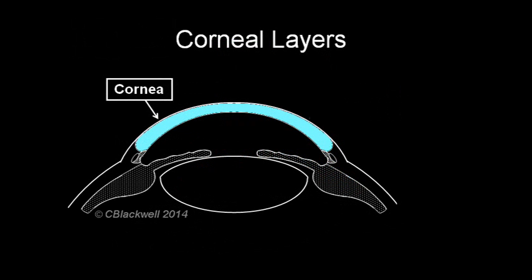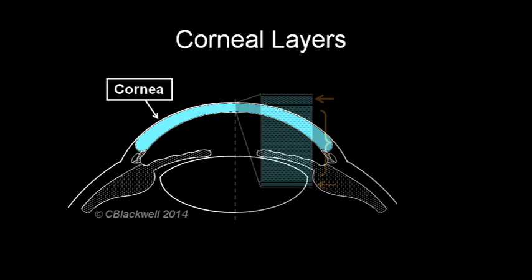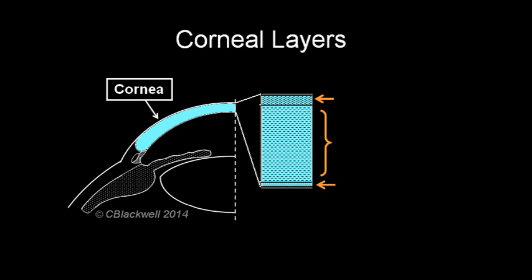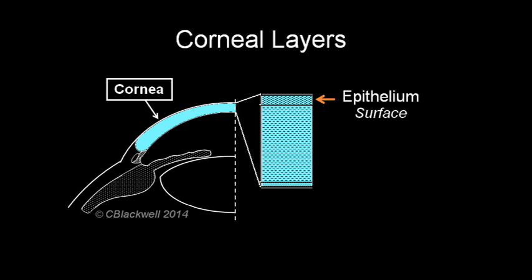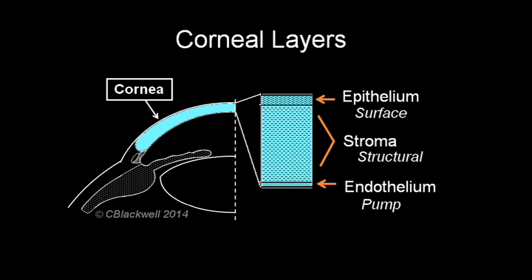In order to understand how the surgeries work, we need to do a brief review of the layers of the cornea. Here we have taken a section of the cornea showing three layers. The epithelium provides a smooth protective surface. The stroma is the main structural layer. The endothelium, though it is only one cell layer thick, is important because it pumps extra fluid out of the cornea, which keeps it clear.